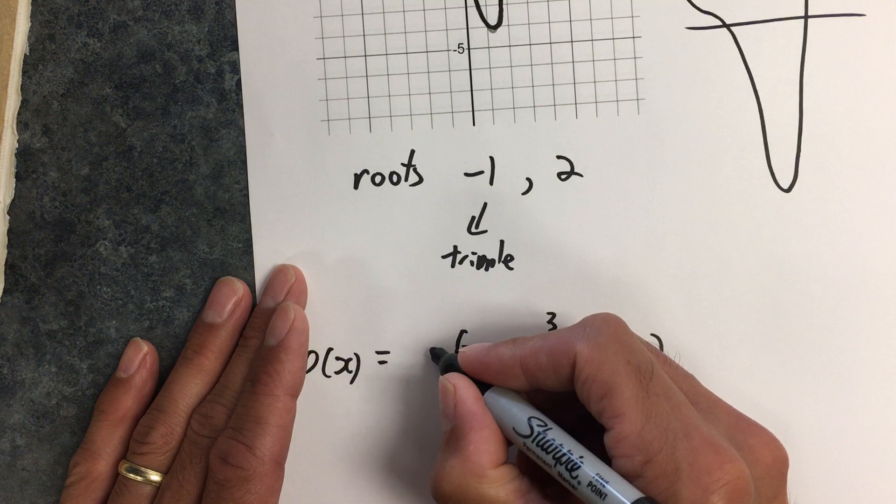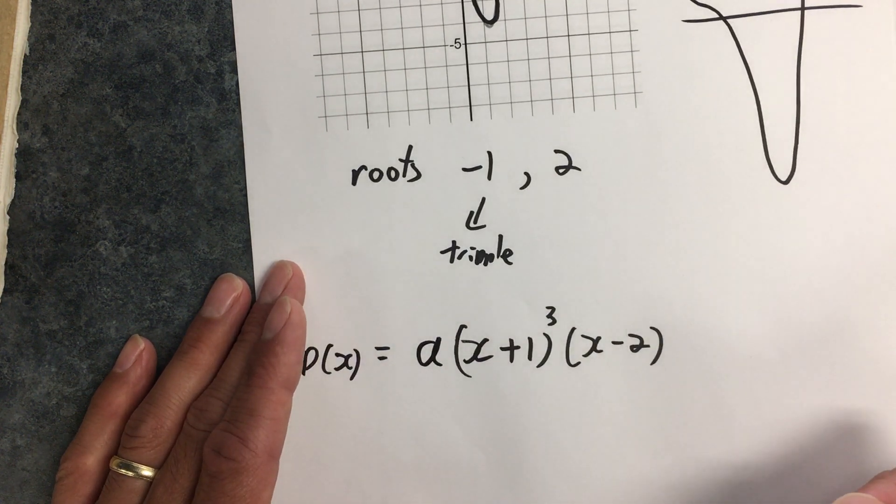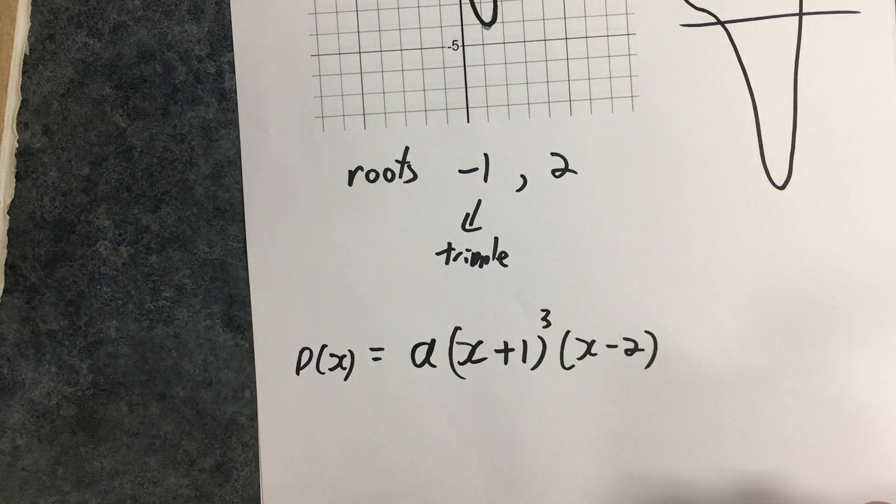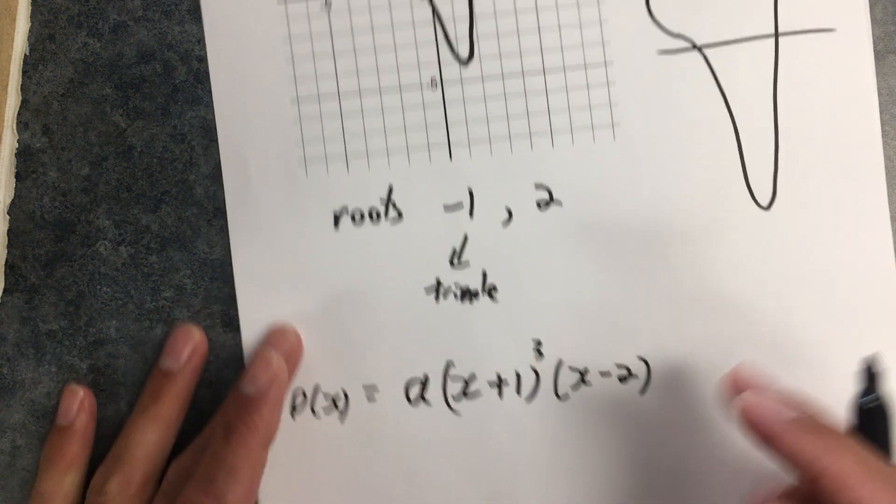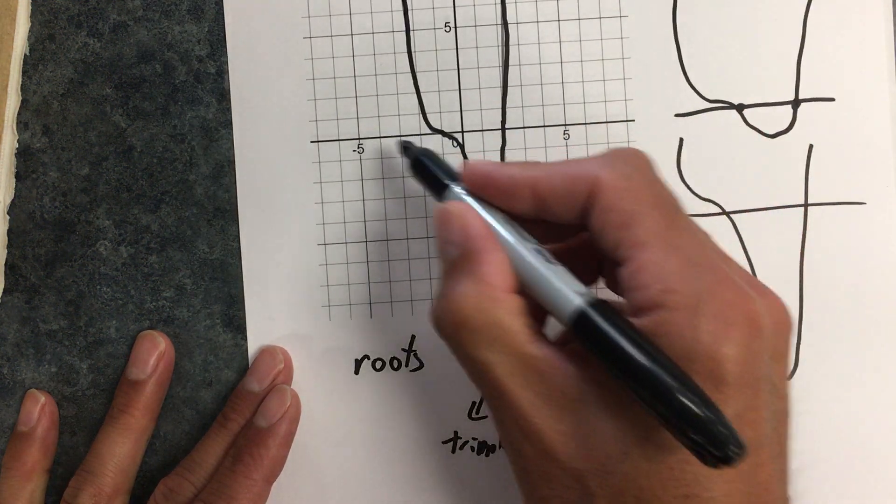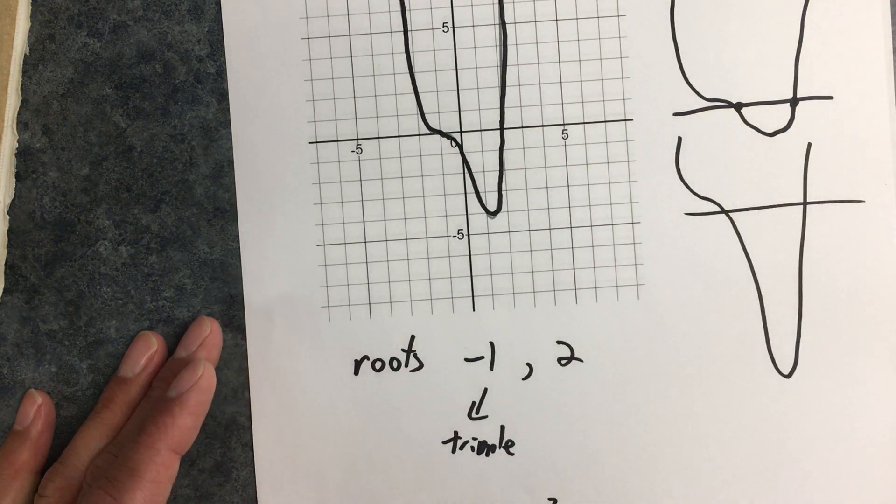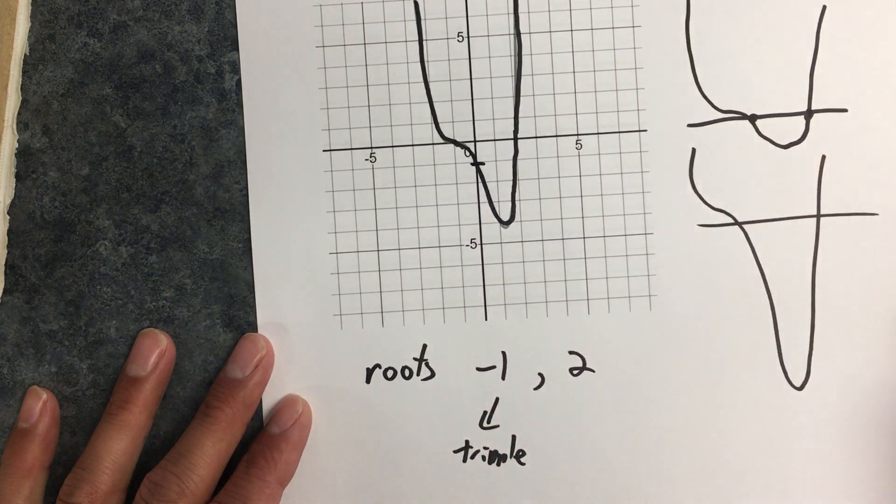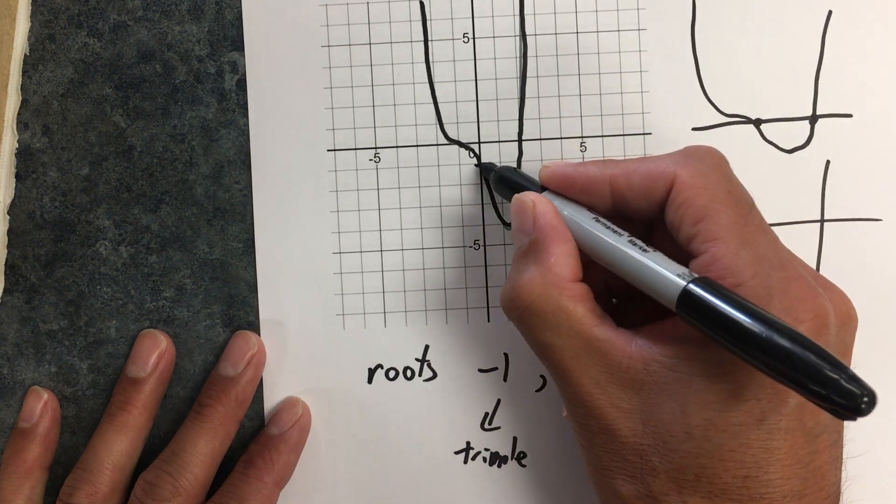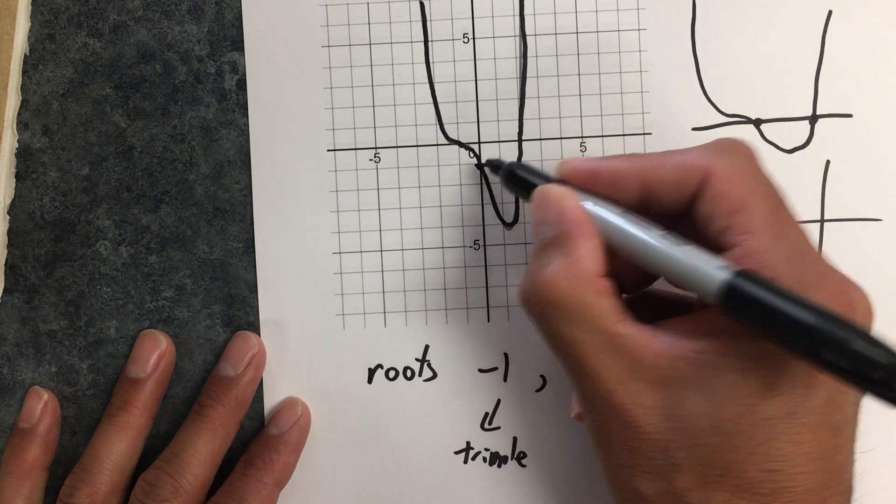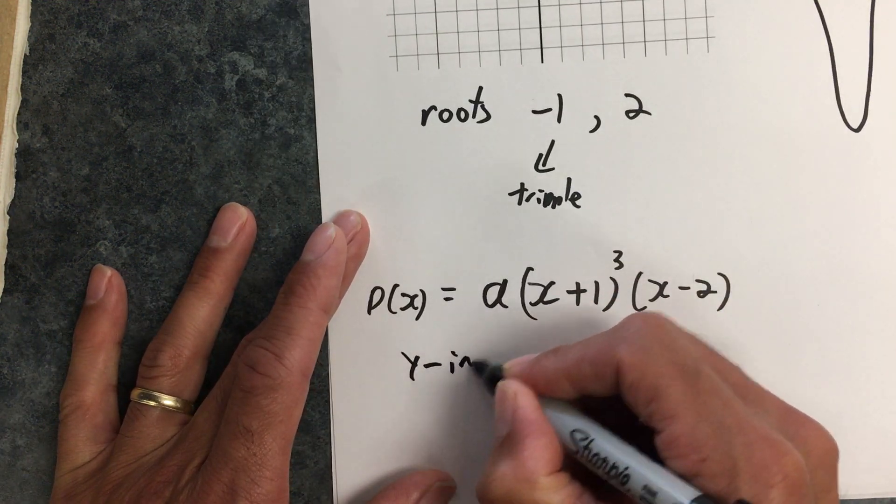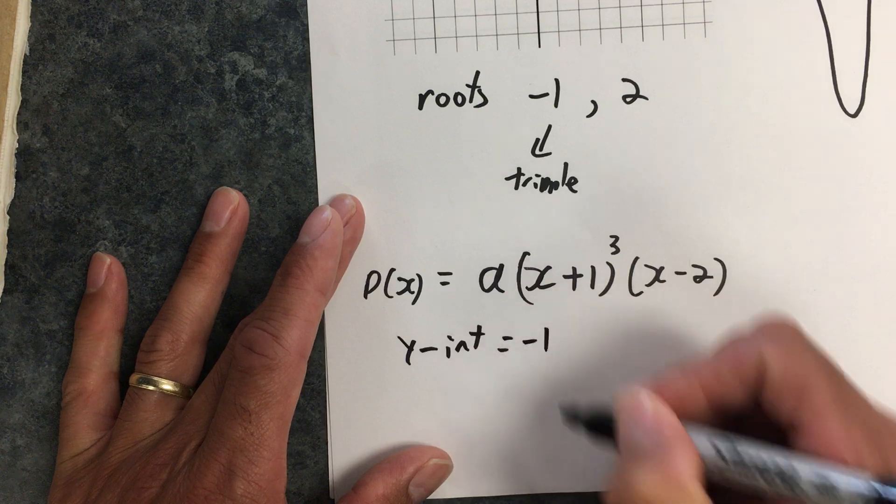Well, I've got to determine the value of that leading coefficient. Here's how I'm going to find the leading coefficient. I'm going to look for a point on this polynomial other than the roots. And the point that I have is right here. It's where it hits the y-axis. This intersects the y-axis at negative 1. My y-intercept is negative 1.